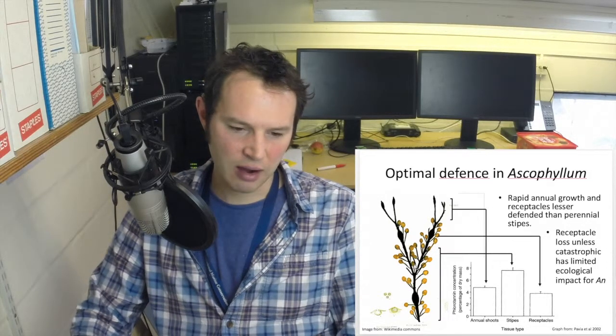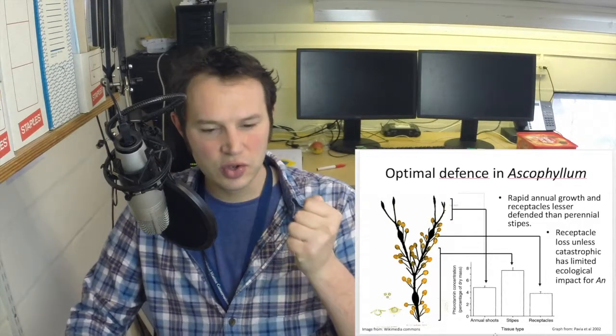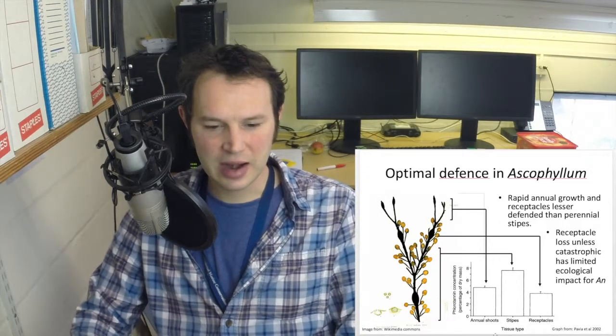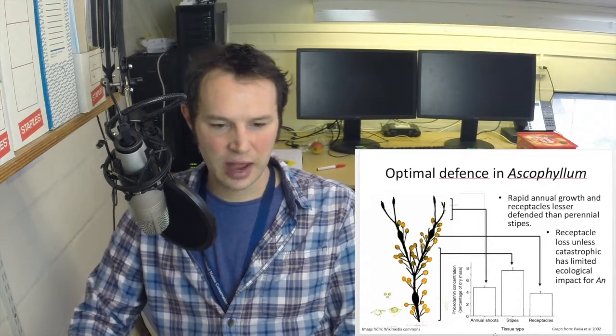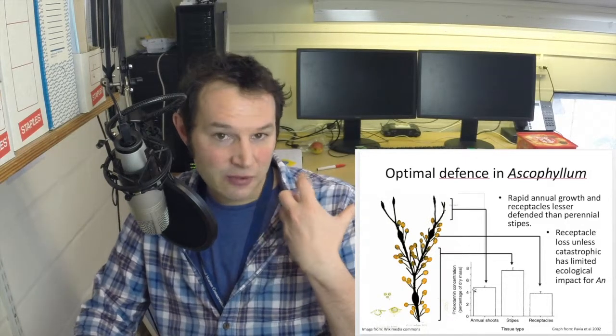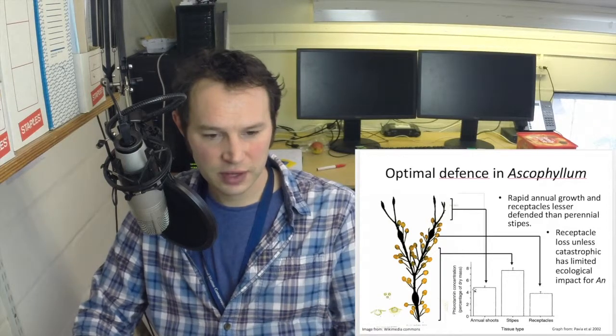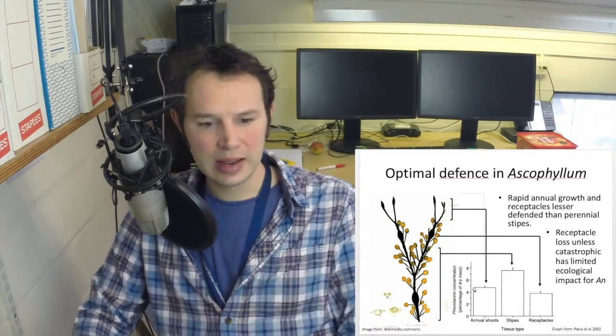The stipes on the other hand, which is the central axis running down the alga, is highly valuable. If you don't have that, you don't have shoots, you don't have receptacles, and that is defended to a higher level than the other tissues surrounding it. So by allocating your defense into tissues with the highest value for yourself, you're therefore optimally adjusting your defensive allocation.